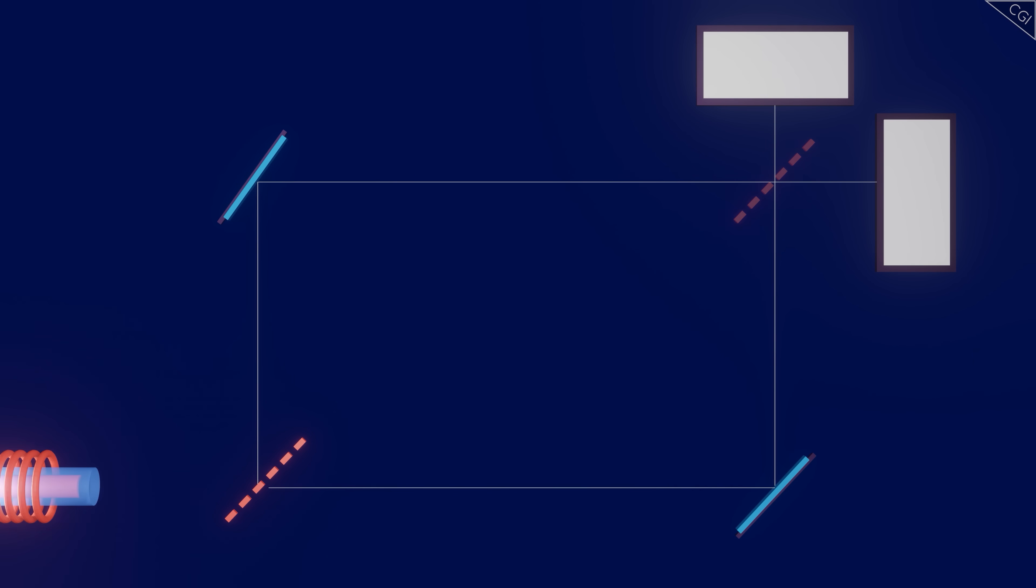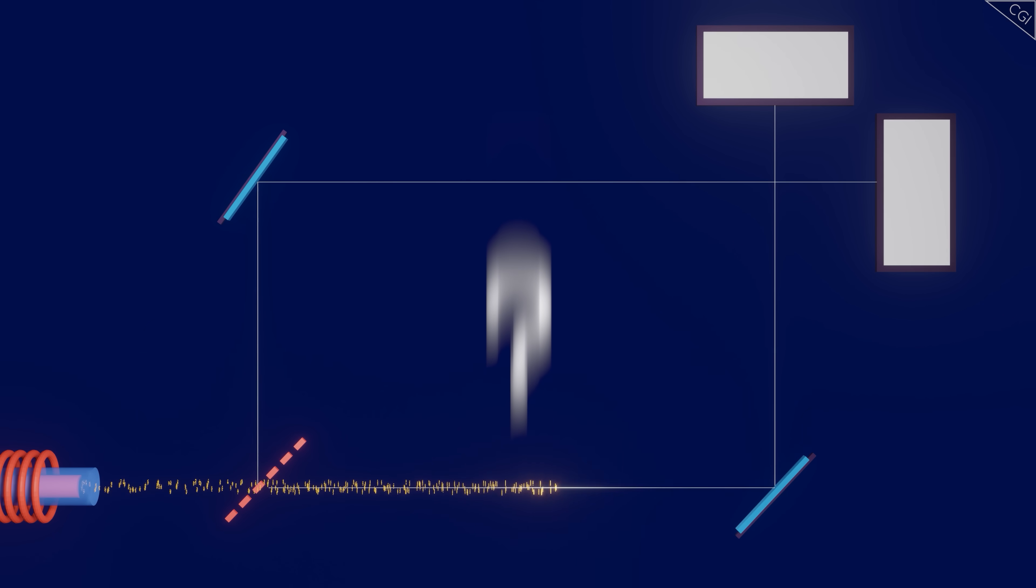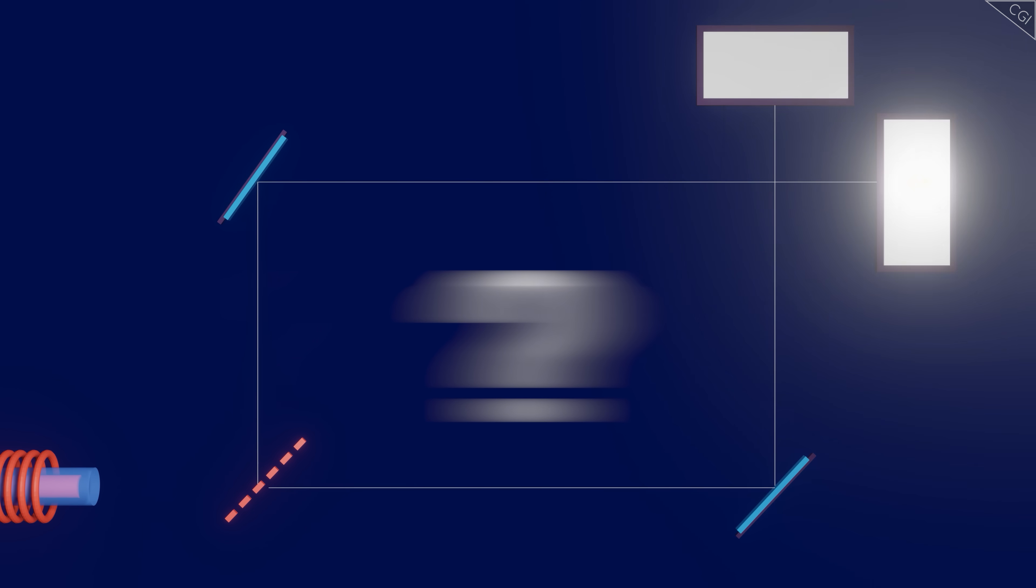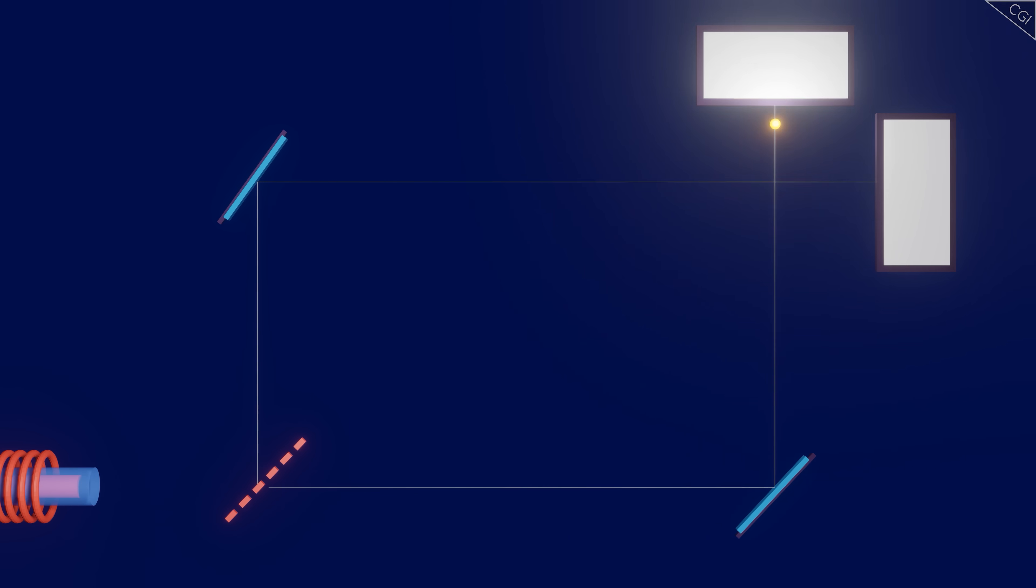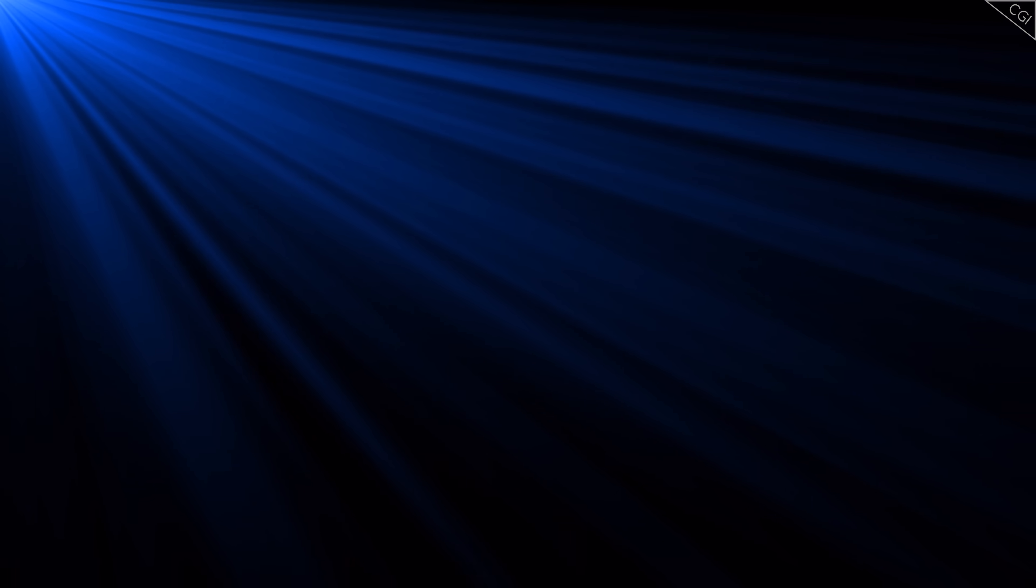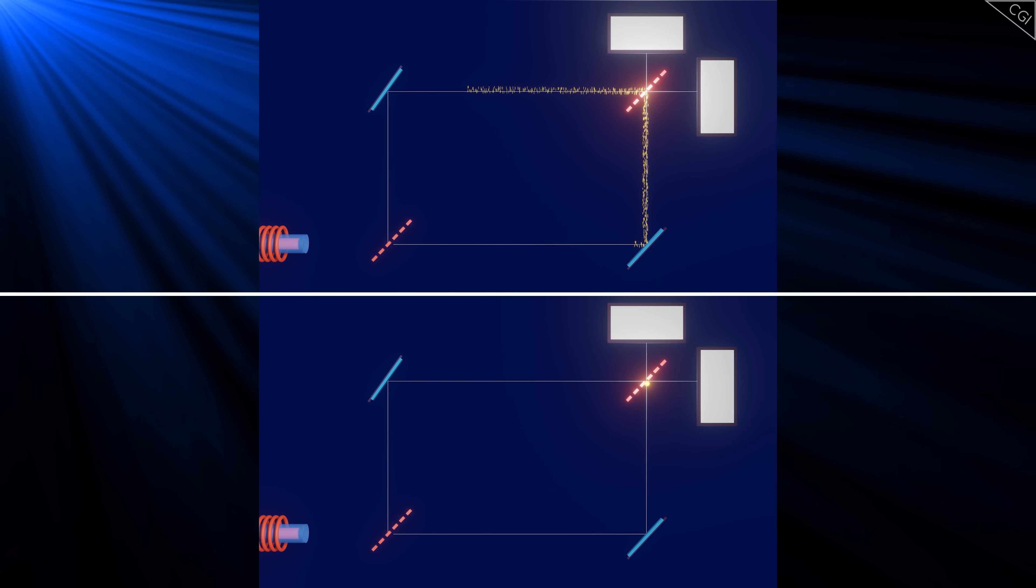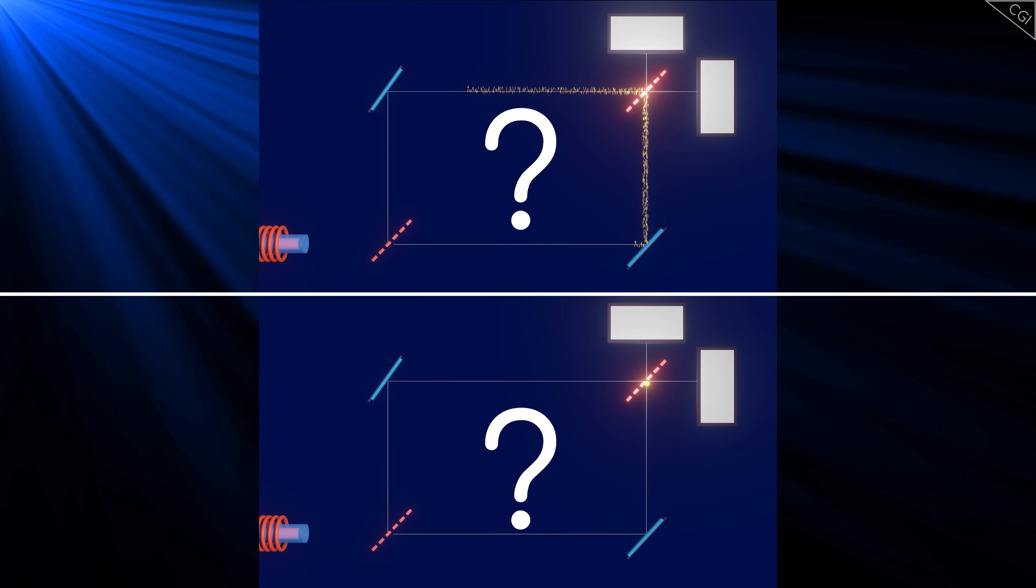But what happens if you remove the second beam splitter? Suddenly, you know which path the light traveled down. If light arrives at the top detector, it must have arrived from path 1. If it arrives at the side detector, it must have come along path 2. And something about this knowledge spooks the light. It stops going down both paths, and suddenly each photon only arrives at one detector. Here's the question. What happens if you insert the beam splitter after the photon has already started down either one or both routes? This is why the test is called delayed choice. If you delay choosing how exactly you intend to detect the photon, whether by knowing which path it came down, or making that ambiguous to you, what happens to the light?